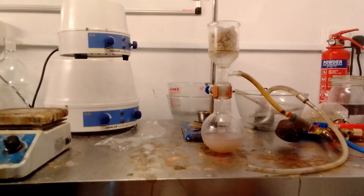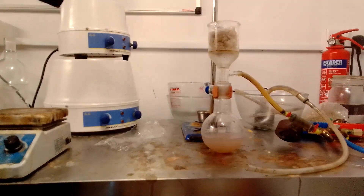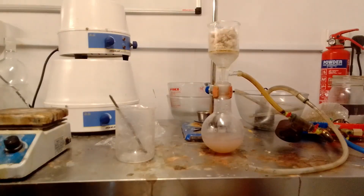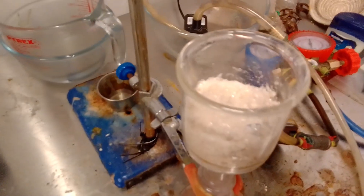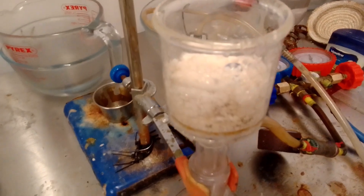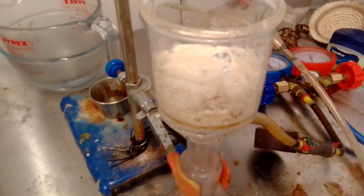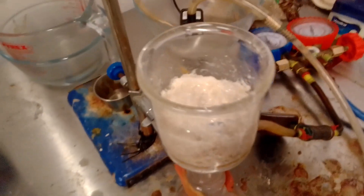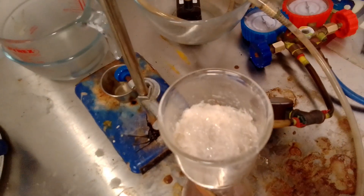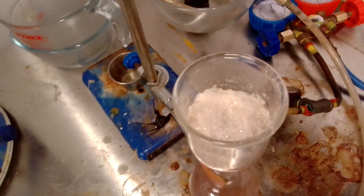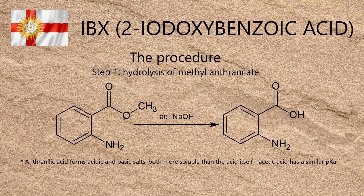As this represented a yield of 118%, it was clear that the product was still very wet. But as it was by far the least brown anthranilic acid I've ever obtained from this reaction, I decided not to push my luck by recrystallising it, and instead pressed on and used it as is. From past experience, the actual yield was likely to have been near quantitative.